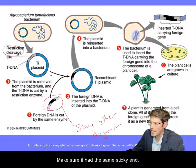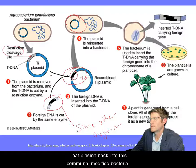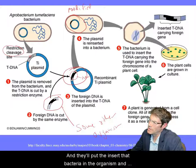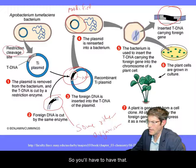They make sure the foreign DNA has the same sticky ends, and then they take that DNA and stick it into the opening that was created in the plasmid. Then they stick that modified plasmid back into the bacteria. The bacteria now has that special gene you're hoping to deliver, and it will be inserted into the host chromosome.